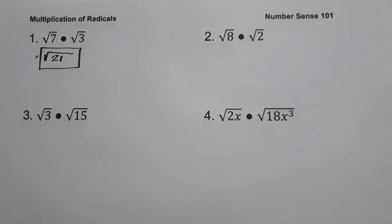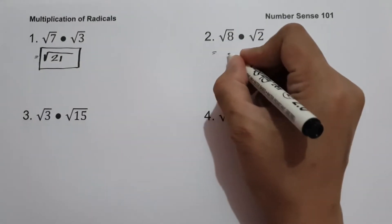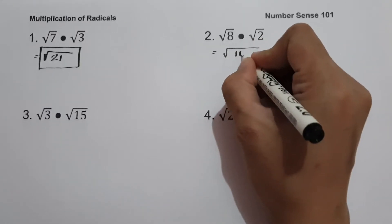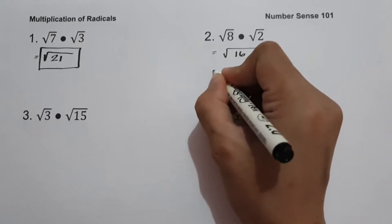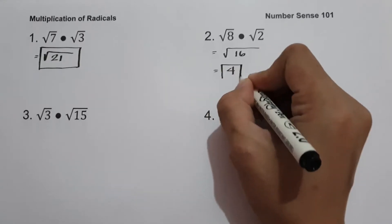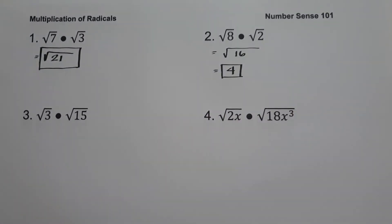On example number two we have square root of 8 multiplied by square root of 2. Since we have the same index, let us have 8 times 2, that is 16, and the square root of 16 is 4, so this will be our answer.